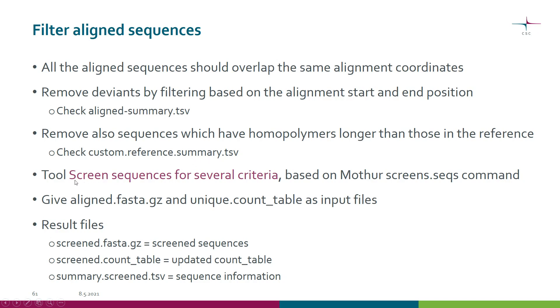The Chipster tool is called 'Screen Sequences for Several Criteria.' It's the same tool that you used before for unaligned sequences, but now we use different parameters because we have aligned sequences.